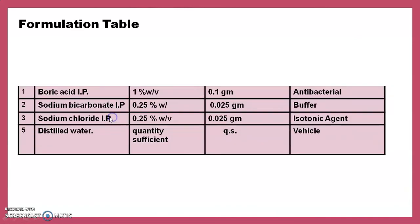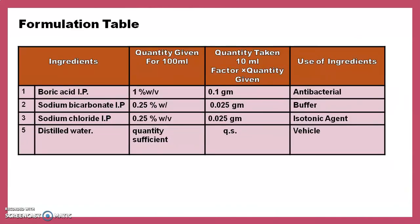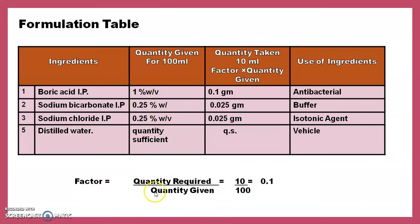The formulation table contains the ingredient, quantity given, quantity taken, and use of each ingredient as per the IP formula. Ingredients are boric acid IP, sodium bicarbonate IP, sodium chloride IP, and distilled water. The formula is given for 100 ml; we calculate for 10 ml using factor = quantity required / quantity given = 10/100 = 0.1. Multiplying all quantities by 0.1 gives the quantity taken. Boric acid is used as antibacterial, sodium bicarbonate as buffering agent, sodium chloride as tonicity agent, and distilled water as vehicle.